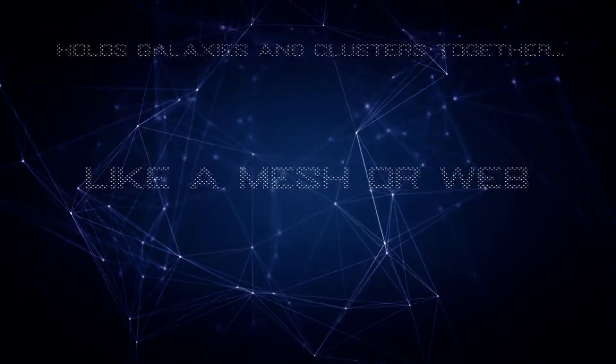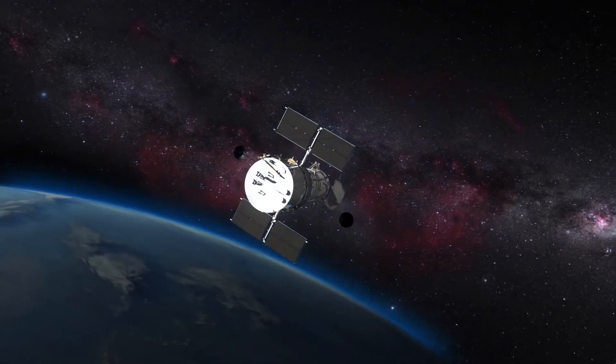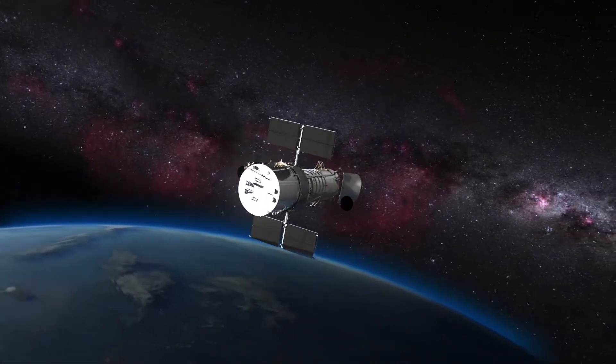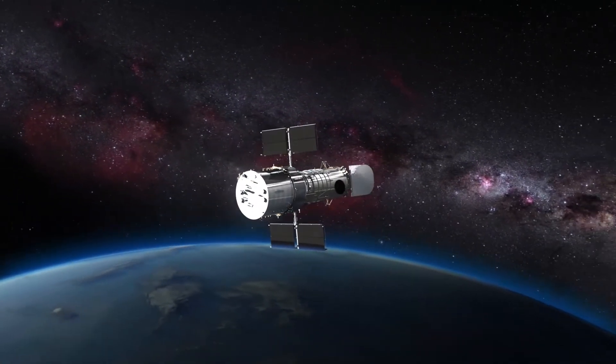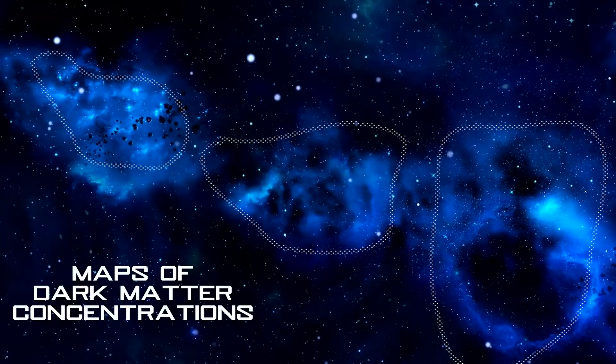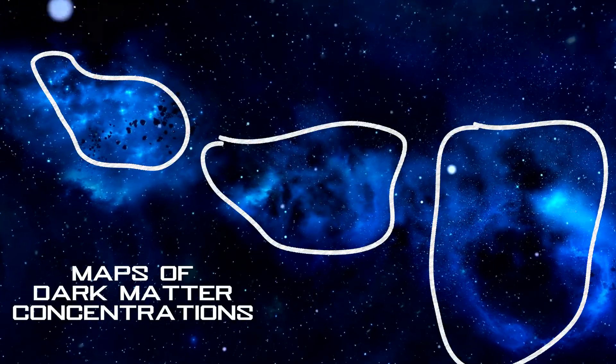Even though it's invisible we can see dark matter by studying the way that it bends the light around galaxy clusters. By combining this information with optical measurements scientists have even been able to assemble maps of dark matter concentrations in space.